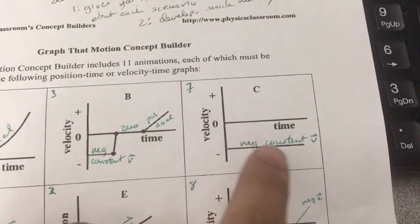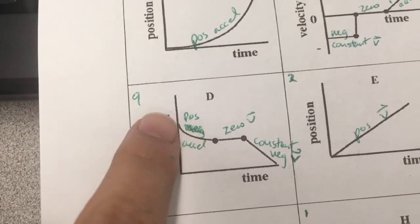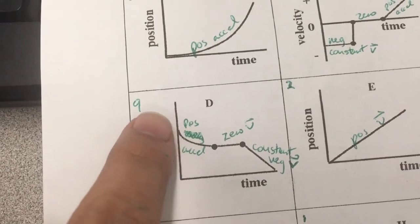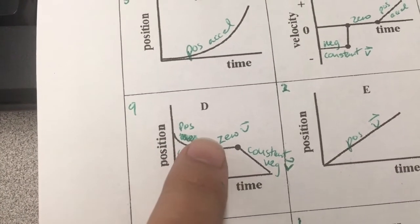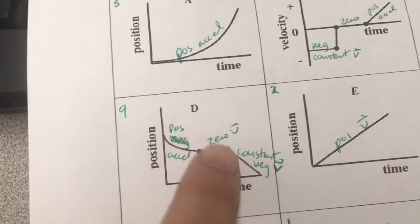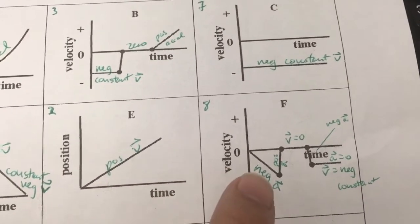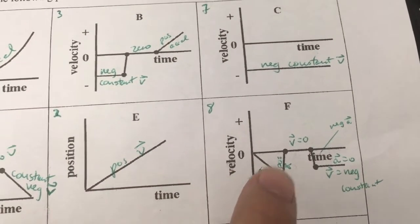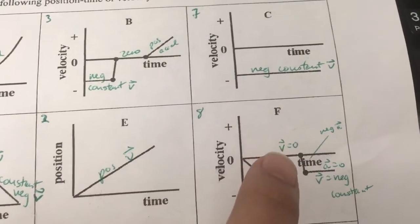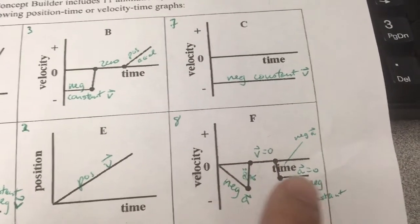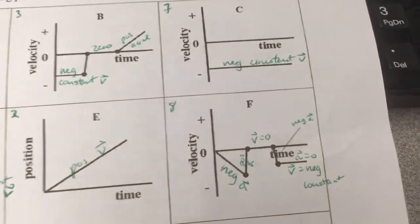This is negative constant velocity. This is positive acceleration because we are going from negative to stopped, then zero velocity, and then a constant negative velocity. Positive velocity, negative acceleration, then stopping — a velocity of zero — then negative acceleration, and then a constant negative velocity.